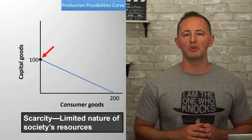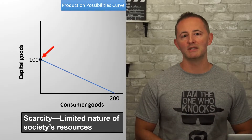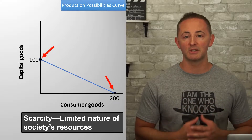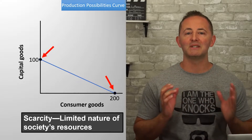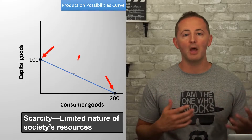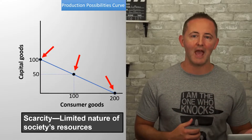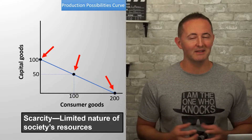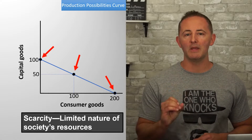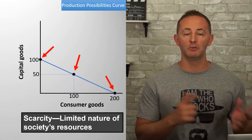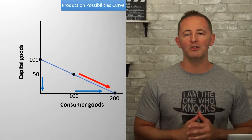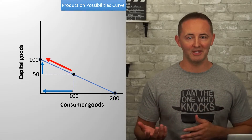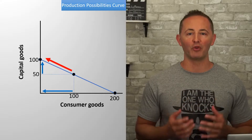But notice that they'll be producing zero consumer goods. At the other extreme, they can use all their resources to produce 200 consumer goods, but then they'll have zero capital goods. Or they can produce some combination in between, like 50 capital goods and 100 consumer goods. That's essentially the idea of trade-offs. If they're operating on the PPC and want to produce more consumer goods, the only way to do that is to produce fewer capital goods — and if they want more capital goods, they'll have to produce fewer consumer goods.